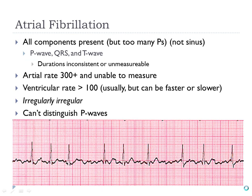With AFlutter you can have an atrial rate of 200–300; with AFib it's going to be really high as well, because you just cannot decide what is what — it looks very jagged, unable to be interpreted. Sometimes with AFib the rate can be normal, but a lot of times you'll have an increased rate, and sometimes we call that RVR — AFib with RVR means rapid ventricular response.